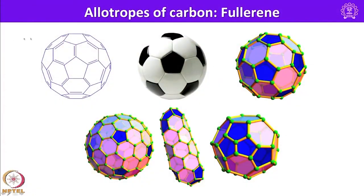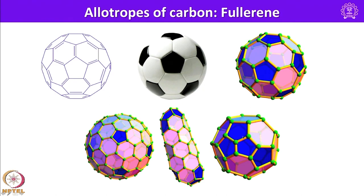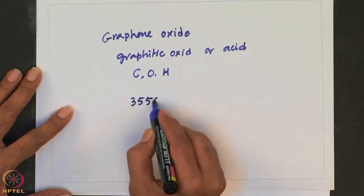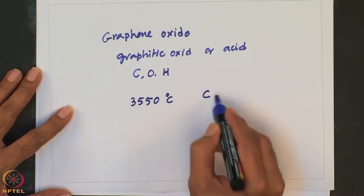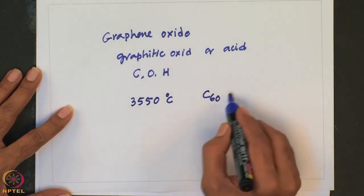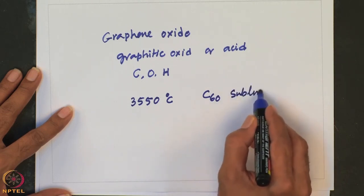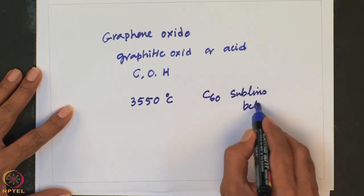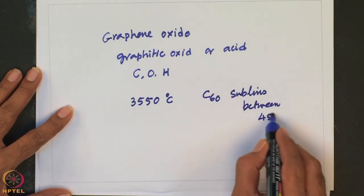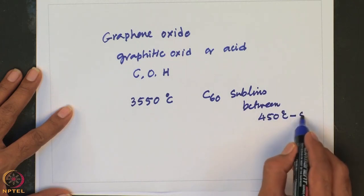Fullerene is made up of hexagonal as well as pentagonal rings — 6-membered as well as 5-membered rings. The melting point of diamond and graphite are greater than 3550°C, but C60 sublimes between 450°C to 500°C.